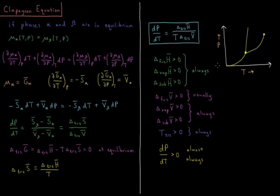What does this imply about the shape of these various curves? The molar enthalpy change of phase transitions is defined going in the direction of increasing temperature: solid to gas is sublimation, solid to liquid is fusion, and liquid to gas is vaporization. The molar enthalpy change of those phase transitions is always greater than zero — sublimating, melting, or boiling a substance always requires an input of heat. It is always endothermic, so delta H̄ of transition is always positive.